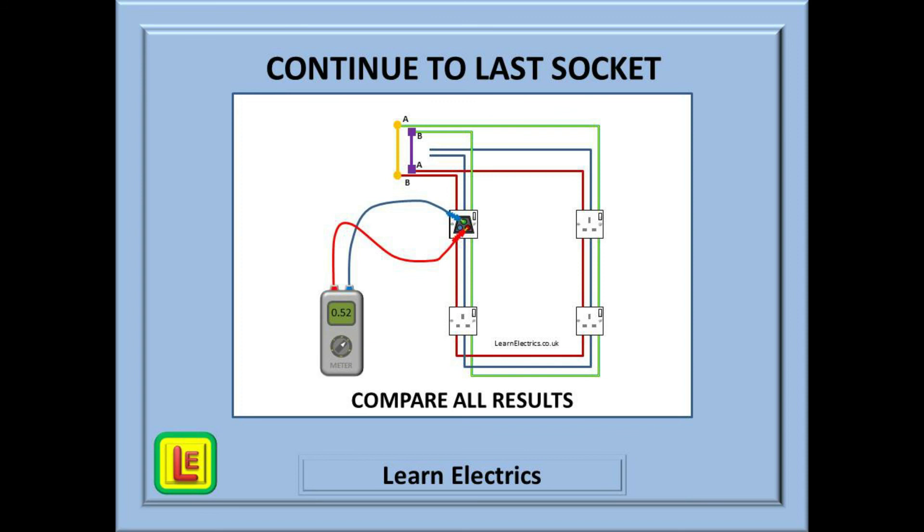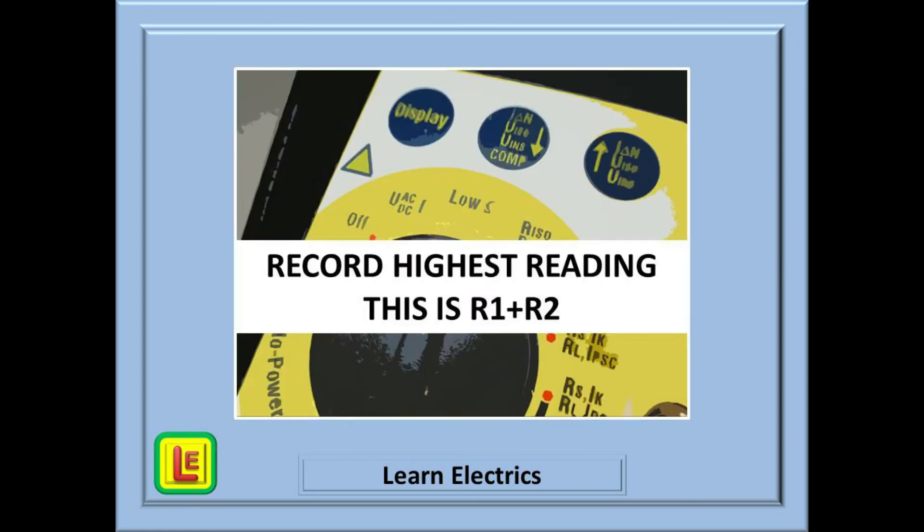Continue to the last socket and compare the results of all the sockets. Within a small margin, they should all be about the same value. In our example, they should be around 0.52 or 0.53 as a guide, and they should be similar to the calculated value that we had earlier. On the test certificate, record the highest reading. This reading is your worst case scenario. If this is an acceptable reading, then so are all the others. This number will form part of the ZS number for this circuit.